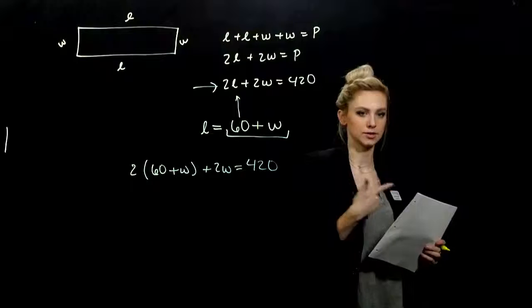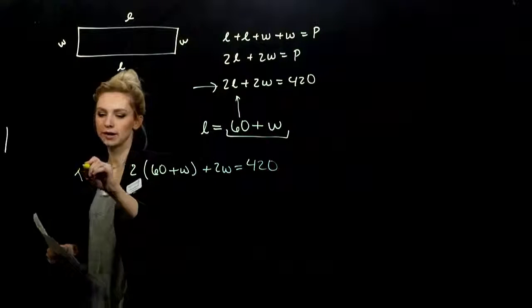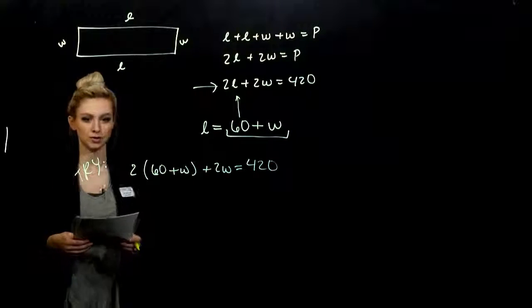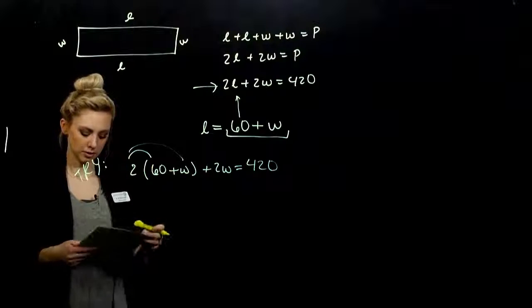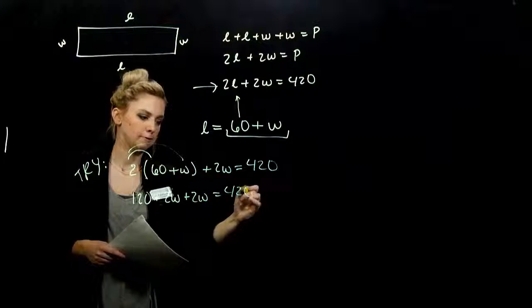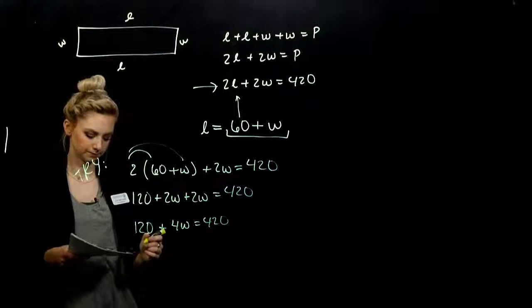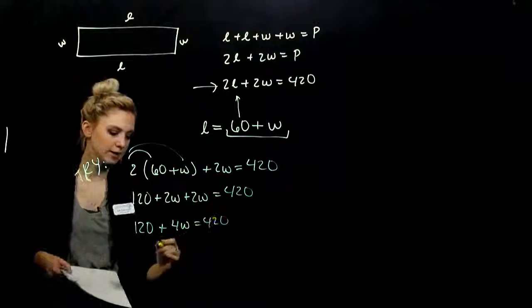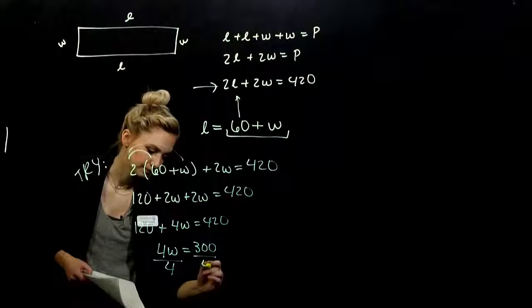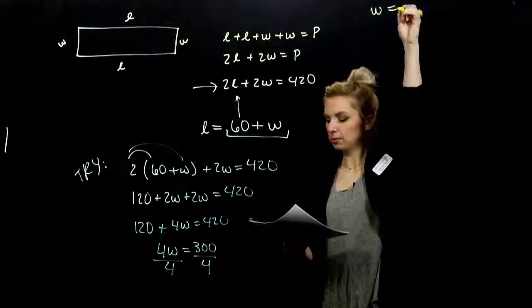So now that everything is in terms of W, one variable, we can solve. So take that. Turn it into a try. Solve. Give me the dimensions of the field. So to get rid of the parentheses, what did you have to do? Distribute in. So I'm looking at 120 plus two W, plus another two W is 420. We can combine our like terms all together. I've got four factors of W. Subtracting 120 from both sides will give me 4W is 300. And dividing by 4, we get that W is equal to what? 300 divided by 4 is 75.